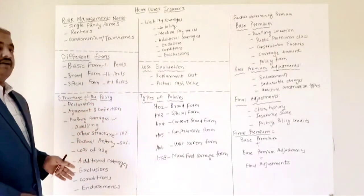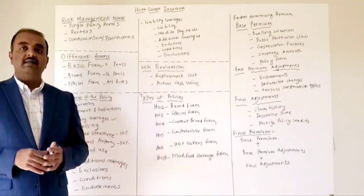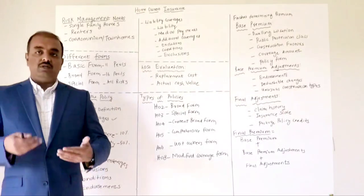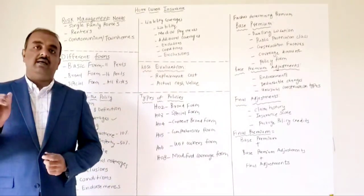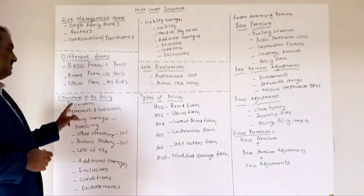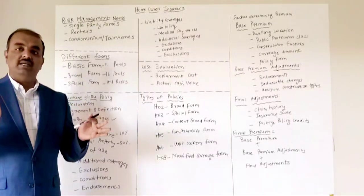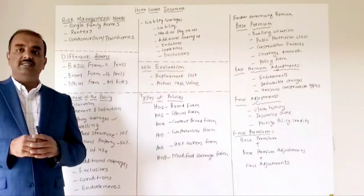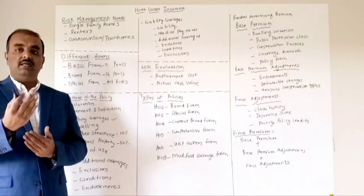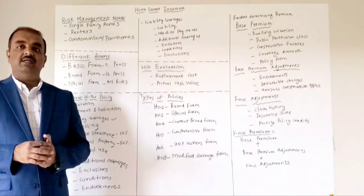That is called the special form. Coming to the structure of a homeowner's policy document — the first page will be the declaration page, which states who is insured, the policy period, the coverage amount, and other basic details. The agreement and definitions section contains the agreement between you and the insurer, plus definitions of unique words specific to property and casualty insurance to eliminate ambiguity in your policy document.